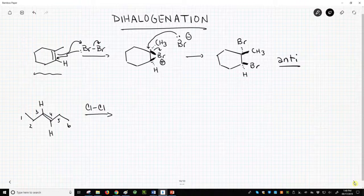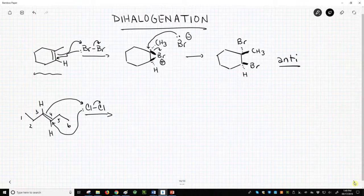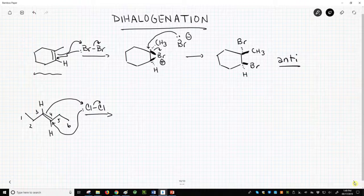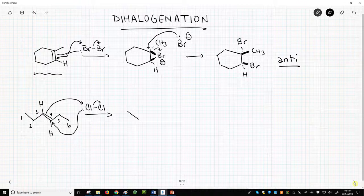The mechanism is essentially the same. There we go. We'll assume that the Cl2 attacks from the top face. That gives us a chloronium ion.